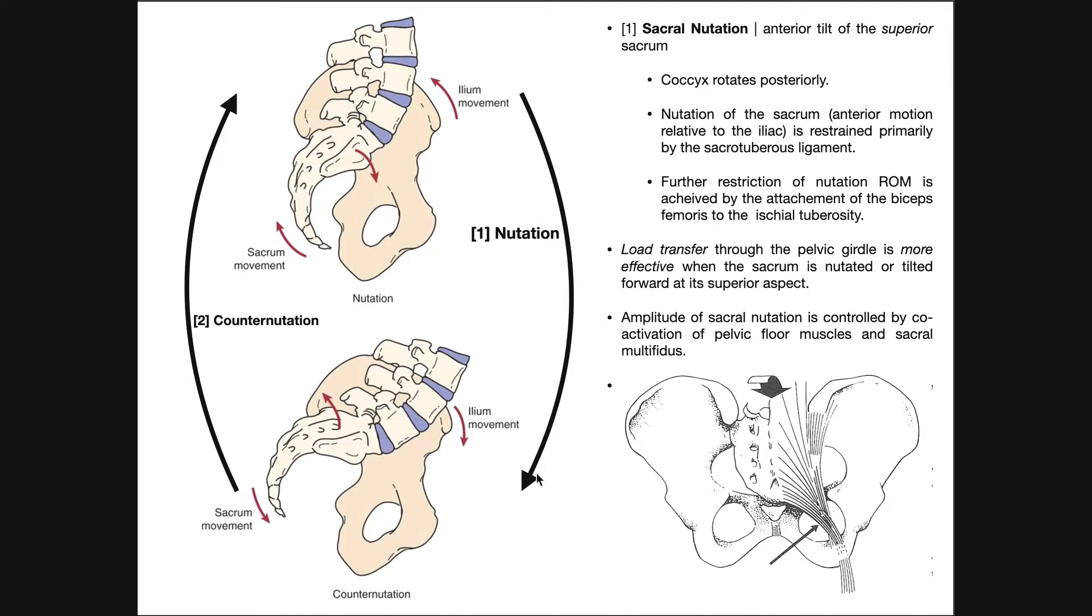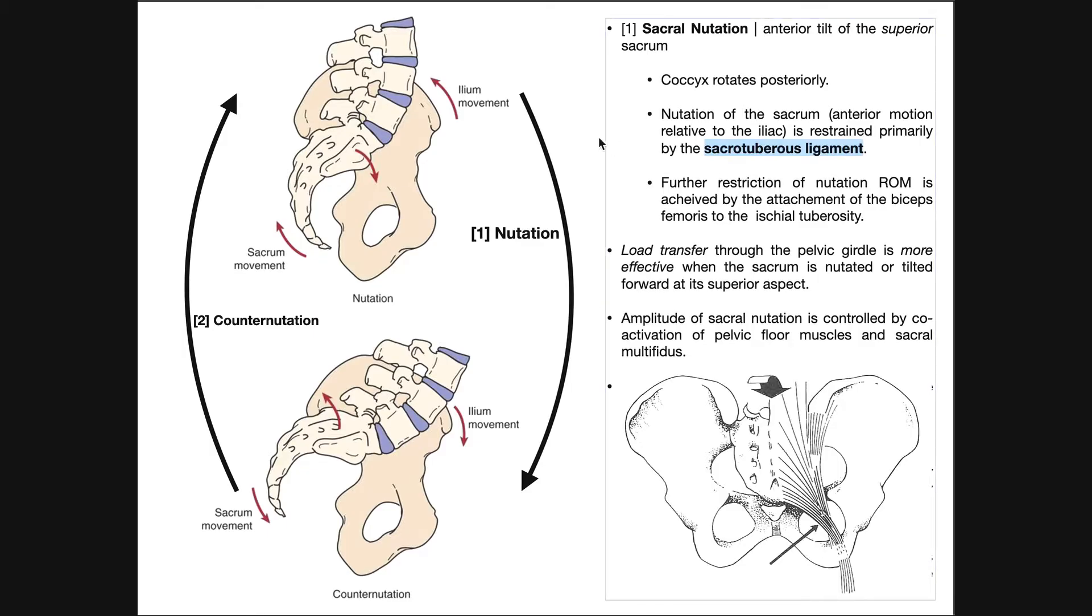Now, it turns out that restriction of nutation is very important for stability of the SI joint, and the major structure that restricts nutation or sacral nutation is the sacrotuberous ligament. Now, as I mentioned in the previous video, the sacrospinous ligament also assists with that.